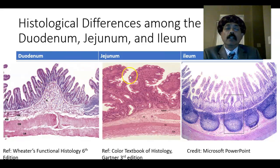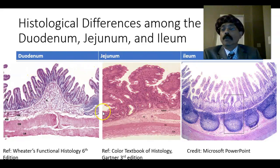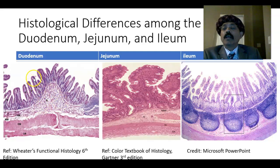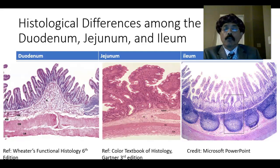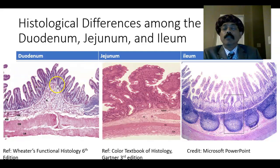If you look at the histological structures of the duodenum, jejunum, and ileum, we will find out that in the duodenum we have submucosal Brunner's glands. These are the Brunner's glands, and the villi are taller in the case of the duodenum. In the jejunum, there is no submucosal Brunner's gland, and the villi are comparatively shorter and broader.